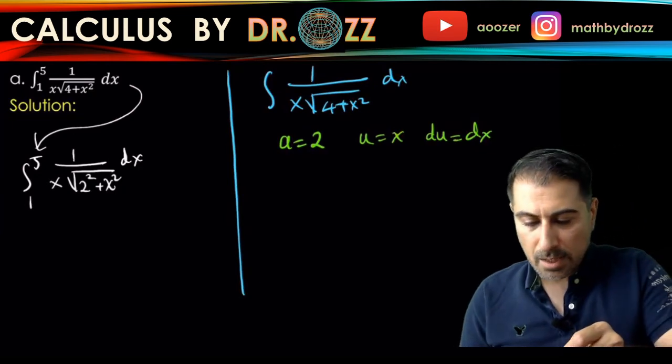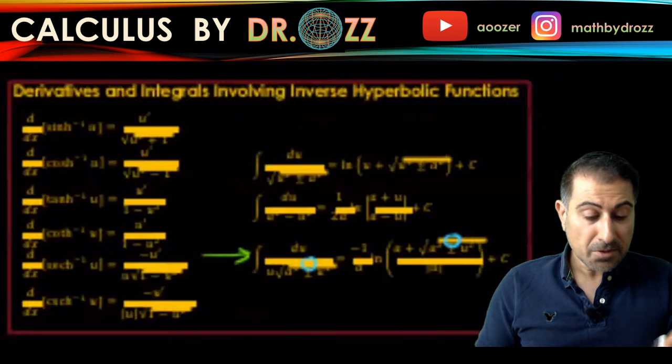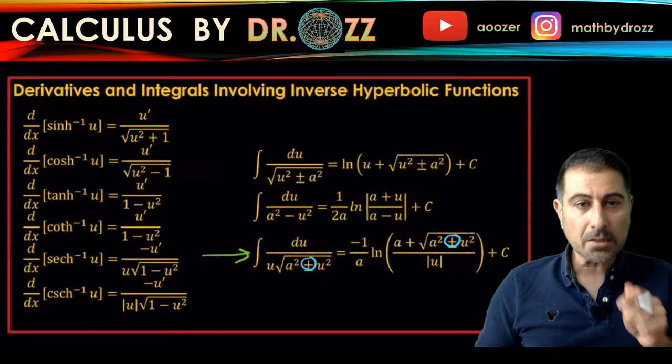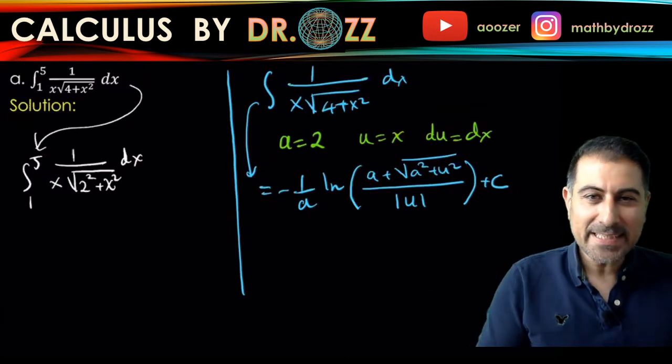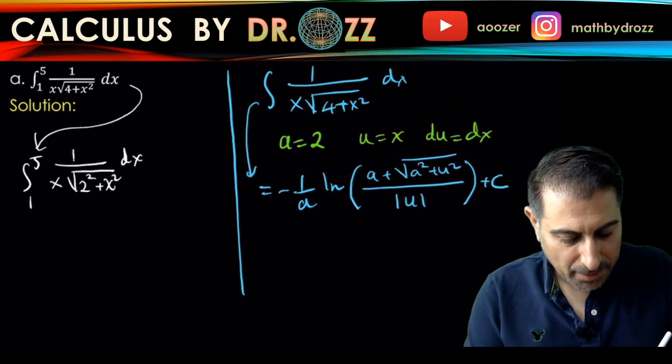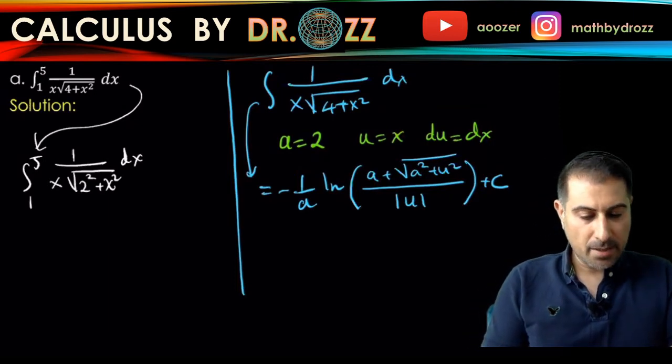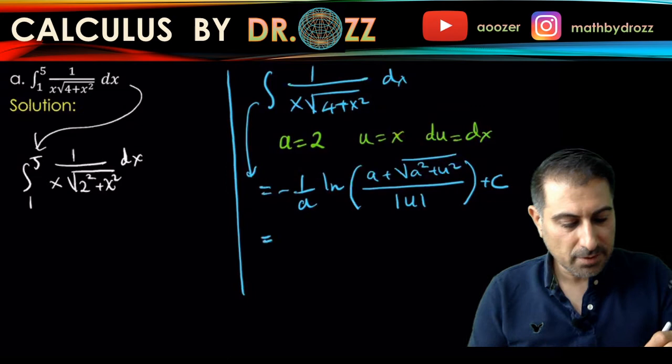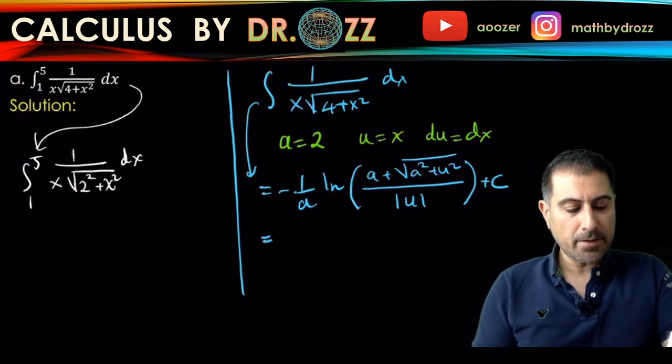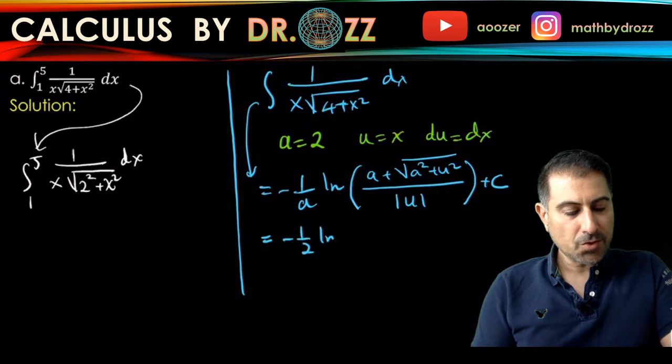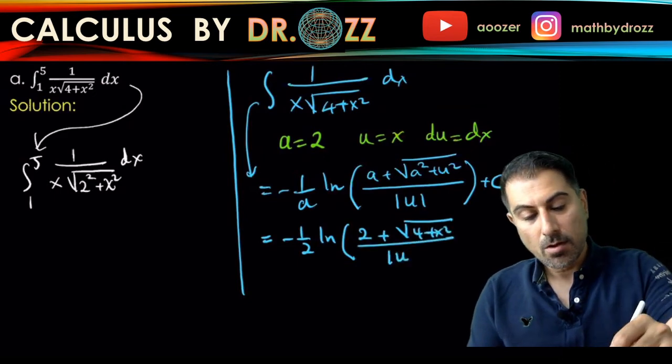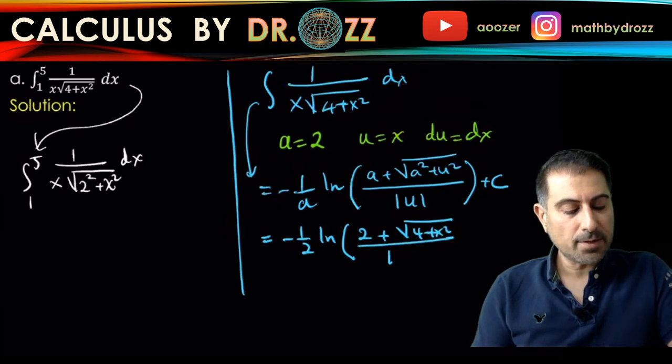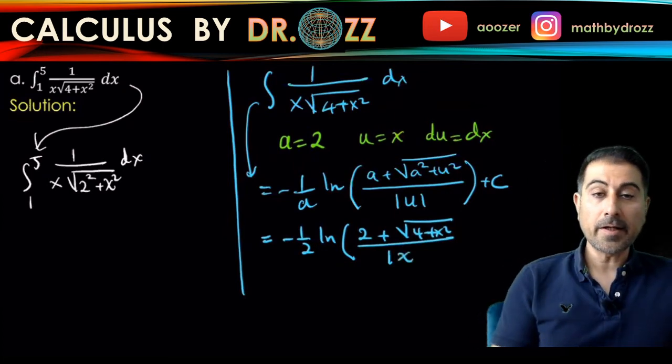So let me just go back and grab this formula to my slide and I'll continue from there. There we go. I just copied everything down here. So I'm going to substitute a two plus radical four plus x squared, all divided by absolute value of x. So absolute value of x plus the integrating constant.